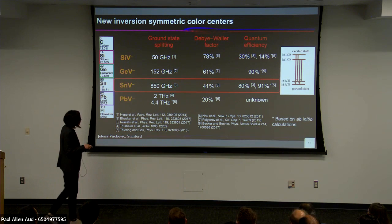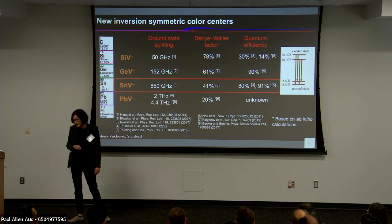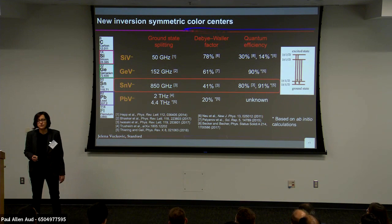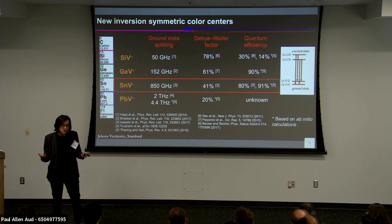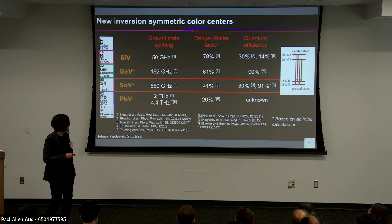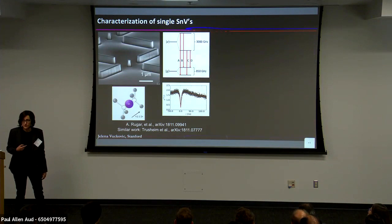On top of that, the internal quantum efficiency of tin vacancy is projected to be much larger than for silicon vacancy. For silicon vacancy it's 14 to 30%, meaning in more than 70% of excitation events you lose energy non-radiatively and don't even emit a photon — that reduces efficiency, increases experimental time, and reduces scalability. For tin vacancy it's around 80 to 90%, and we clearly see it's much brighter. These numbers are projected from density functional theory calculations, but we recently did experiments confirming that tin vacancy works quite well.